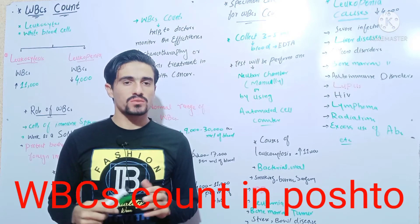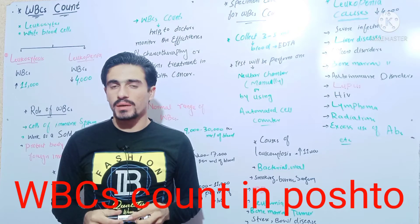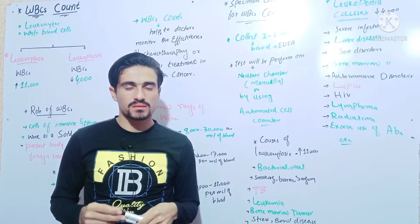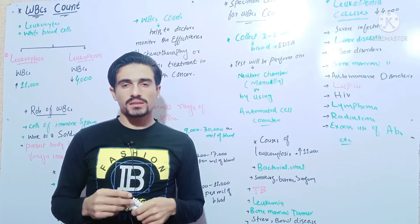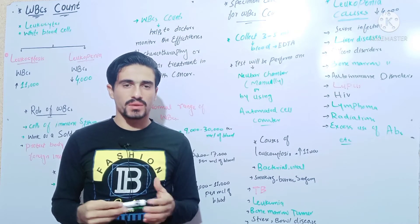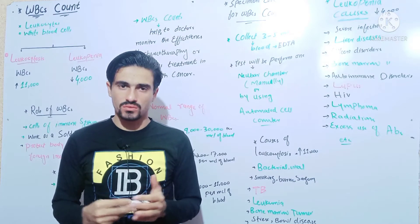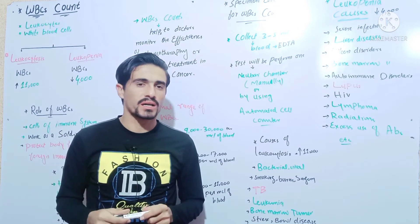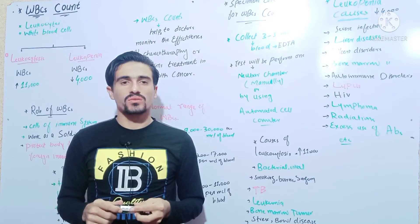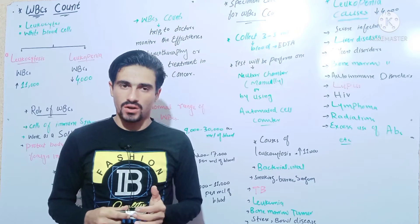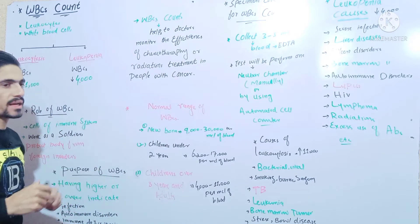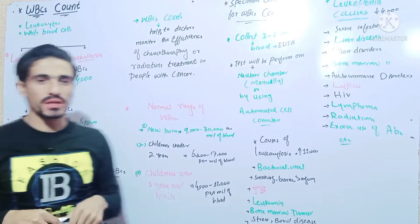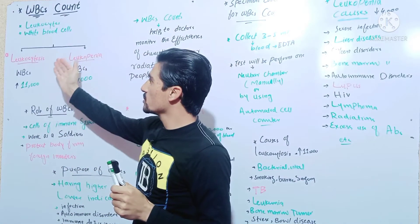Assalamu Alaikum viewers. I am going to talk about the WBC counts. We will discuss the WBC counts, the terminology, the WBC introduction, and the numbers. In previous lectures we discussed the parameters and the hematology test list. Now we will discuss the first parameter: the WBC count. WBC stands for white blood cells, also called leukocytes — they are the same thing.